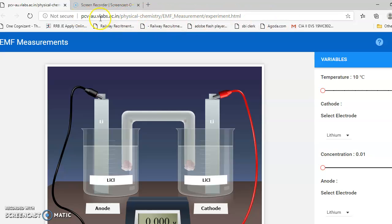This experiment is determination of EMF. We can measure EMF, from which we can also determine the single electrode potential. On the right-hand side, you can see variables: cathode, concentration, anode, and concentration.